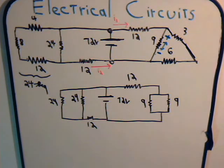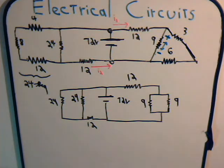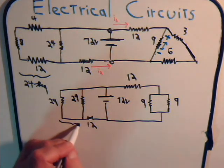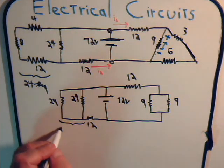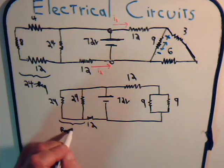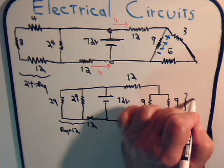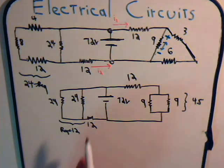When we have two resistors in parallel that have the same value, the equivalent resistance is just one half of R1. So these have an equivalent resistance of 12, and these have an equivalent resistance of 4.5.